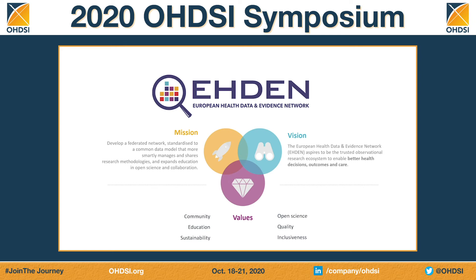The European Health Data and Evidence Network, or as it's more commonly known, Eden, is an IMI-NFPR-funded project comprised of 11 public and 11 private partners. Its goal is to develop a federated data network in Europe, standardized to the OMOP Common Data Model. And importantly, it's not only about building this network, but also about using it to generate meaningful real-world evidence within the project scope.